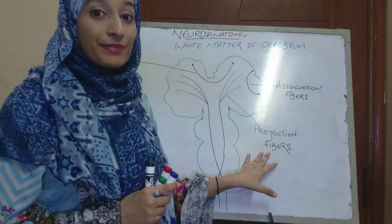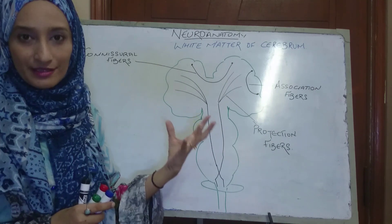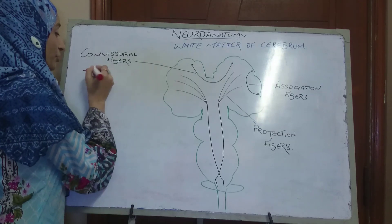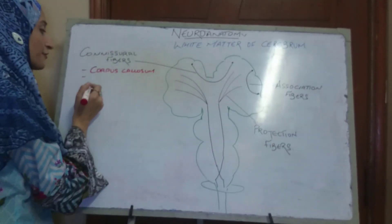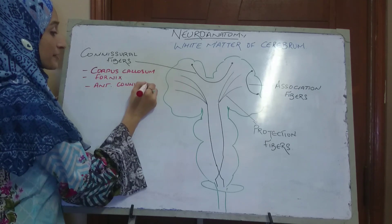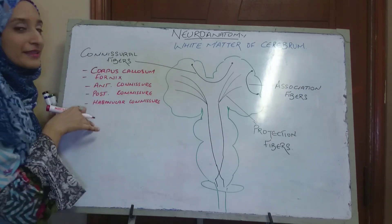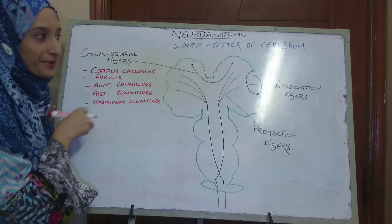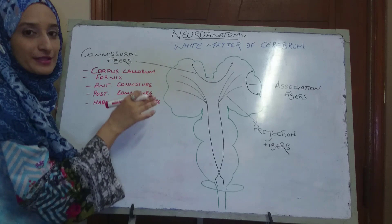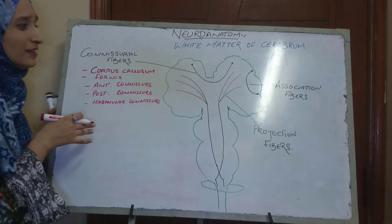Examples of commissural fibers include the corpus callosum — the biggest and best-known nerve bundle — as well as the fornix, anterior commissure, posterior commissure, and habenular commissure. These are the examples of commissural fibers present within the cerebrum, and we are going to talk about each one of them in detail.